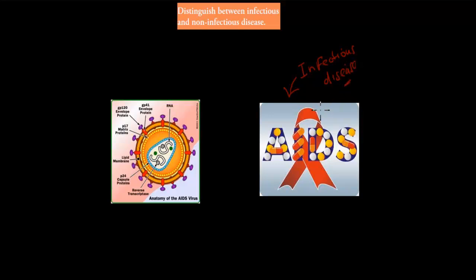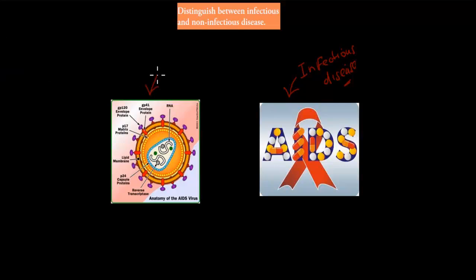The next question would be: why is it infectious? What actually makes it infectious? What's the source of this disease? Well, it's actually a virus. It actually comes from HIV, the human immunodeficiency virus, and this virus causes AIDS.